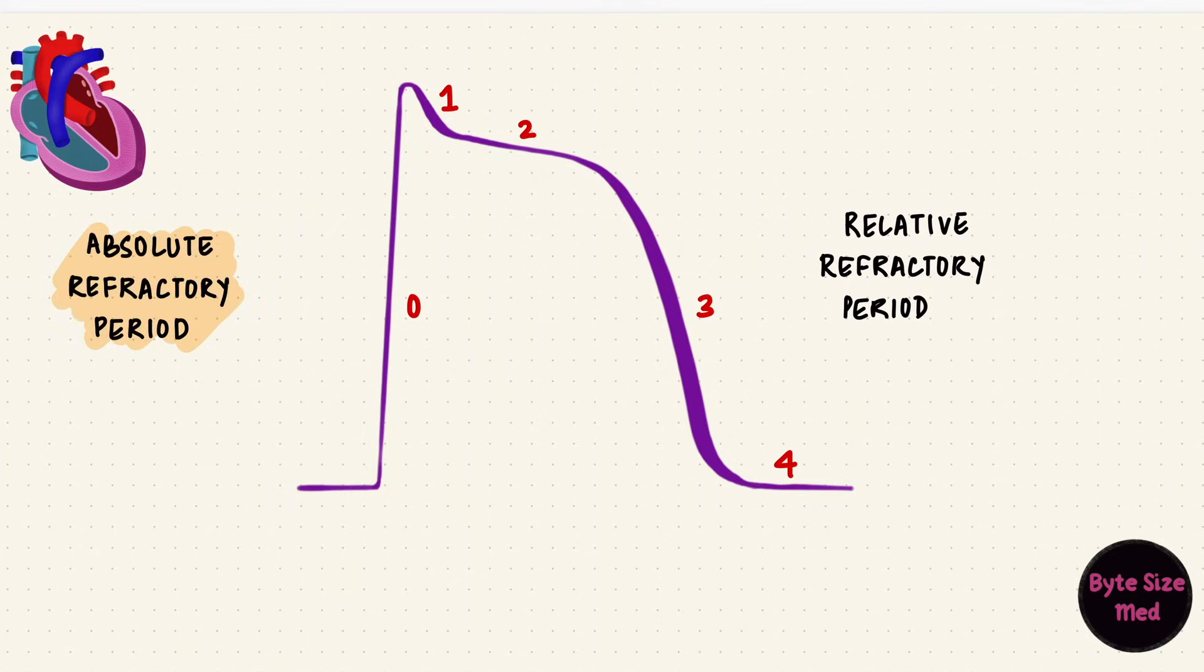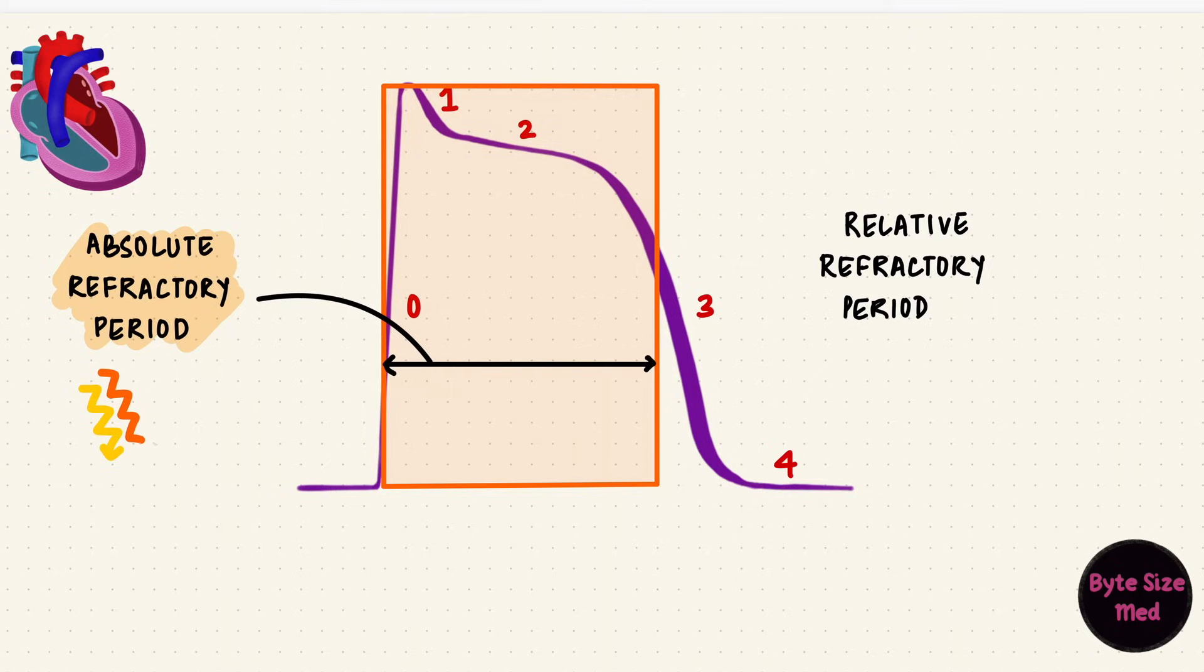The absolute refractory period is for most of the duration of the action potential until a portion of the final repolarization is complete. This is when a second stimulus, no matter how strong it is, can't initiate another action potential because the sodium channels are inactivated.